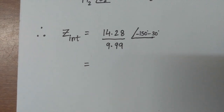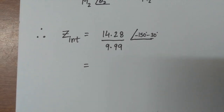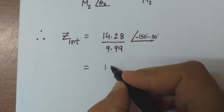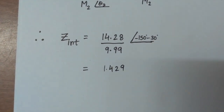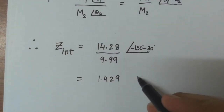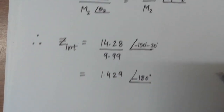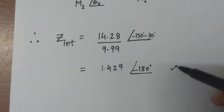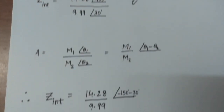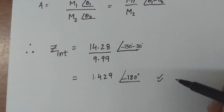After dividing 14.28 by 9.99 we get approximately 1.429. And as you can see, −150 minus −30 gives us −180. So the answer to this division in polar form is 1.429∠−180°. This is how you can divide two polar forms and get the answer.